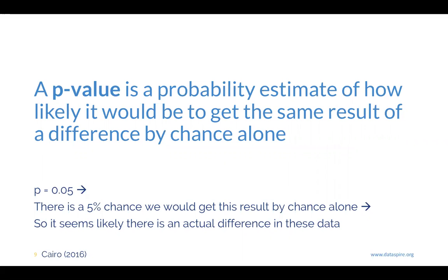When we have a p-value of 0.05, which is often a benchmark used in science, that means there's a 5% chance you would have gotten that result completely by chance alone — having nothing to do with the phenomenon, system, or treatment you put into place. So it seems there's likely an actual difference in these data. If there's only a 5% chance it happened by chance alone — like the wind blew in the wrong direction or the moon was in whatever phase — then that's a pretty good indication there's an actual difference going on in your data based on what you did or looked at.